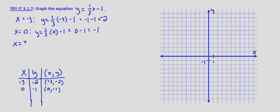So we use x equals 3 to get rid of the 3 in the denominator of one-third. So y equals one-third times 3 minus 1. One-third times 3 is 1 minus 1, which equals 0. So when x equals 3, y equals 0, which gives us the point 3, 0.